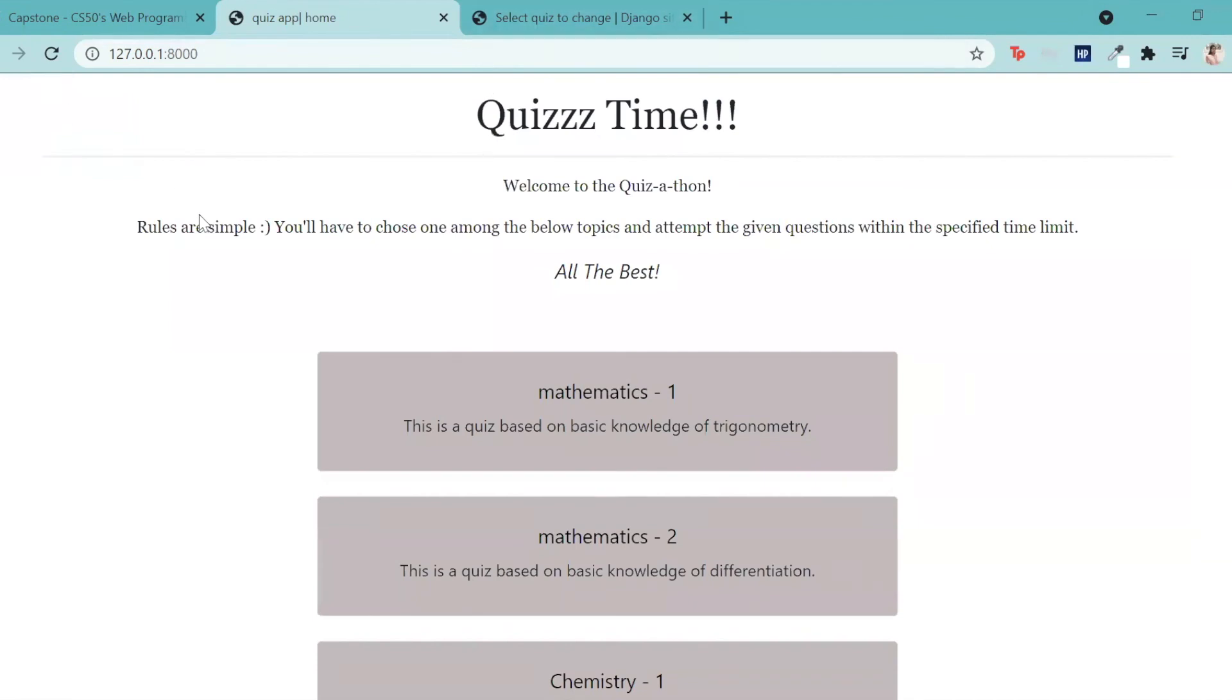I have made use of three apps here called questions, quizzes and results. The questions app consists of two models, answers and questions. The quizzes app consists of the quizzes model and the results app consists of the results model.